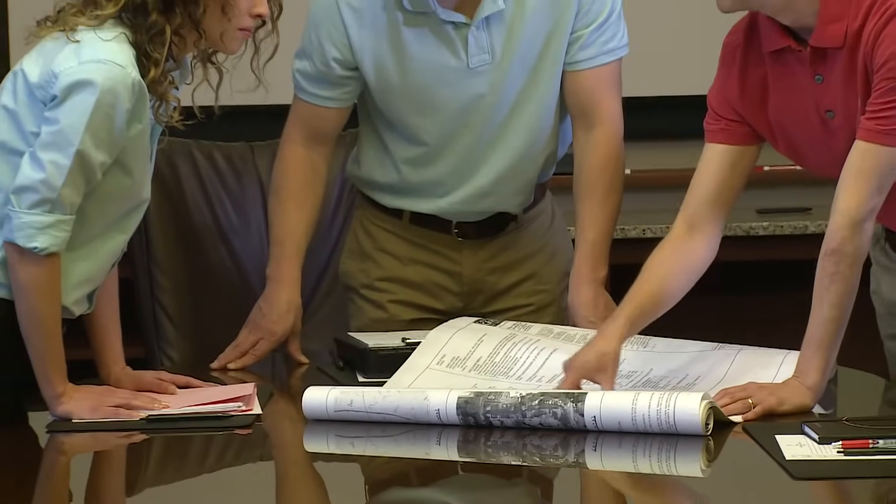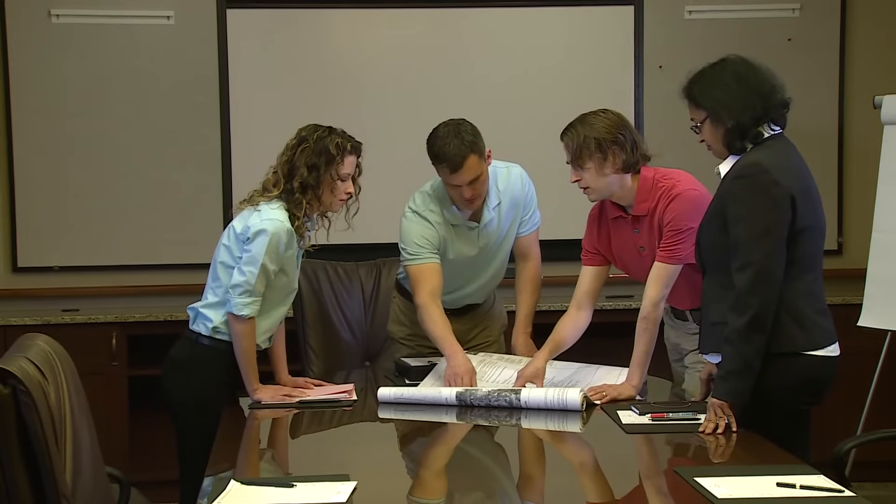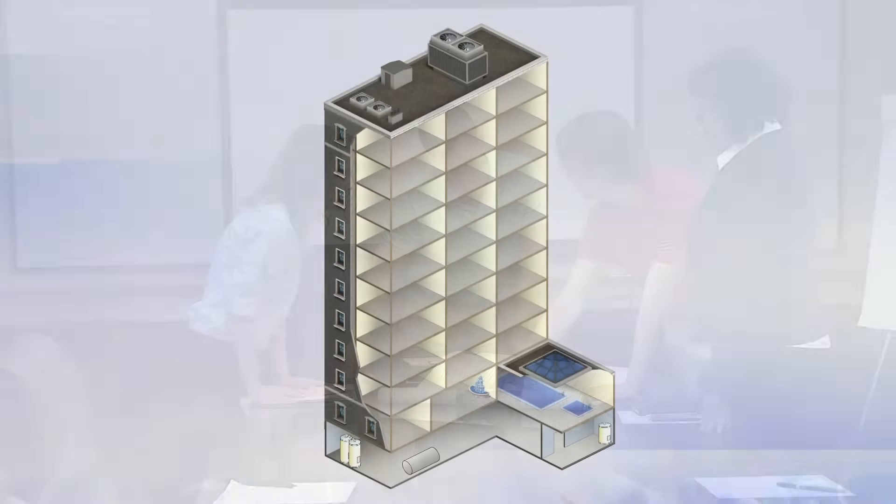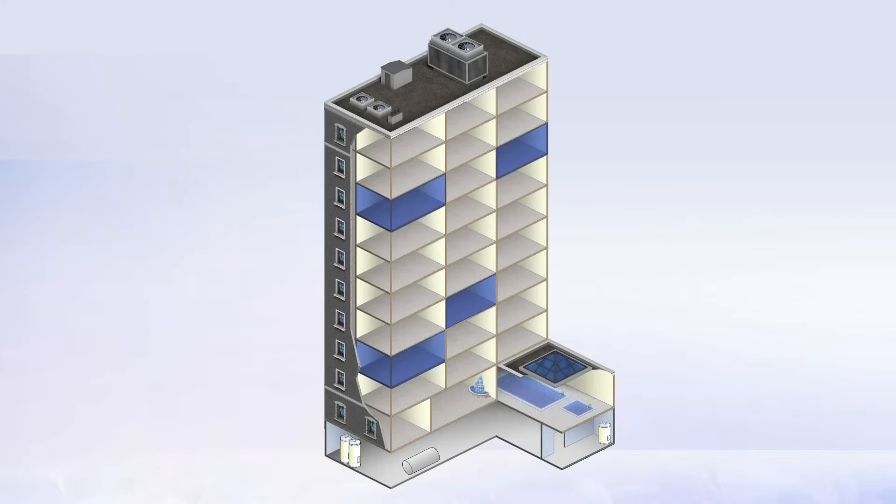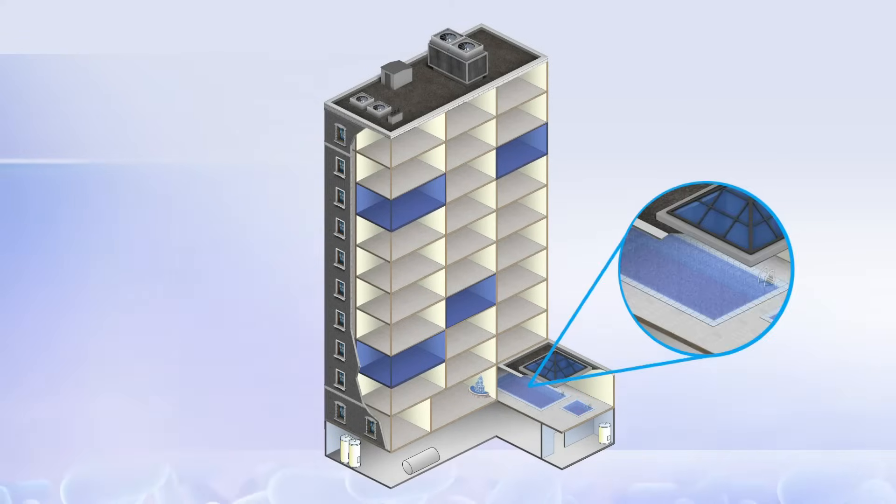Let's look at an example of an outbreak in a hotel to illustrate how to use this information to create a sample plan. Let's say we know the case patients stayed on the third, fourth, and eighth floors of the hotel. Two of the case patients reported using the whirlpool spa, and the other two swam in the pool. All case patients reported showering in their rooms.